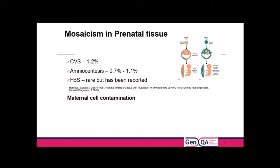A compounding factor can be maternal cell contamination. It's more likely that you would get that in an amnio through maternal blood, because of the way that CVS are cleaned and sorted — or should be — to ensure that there is no maternal decidua associated with the sample.